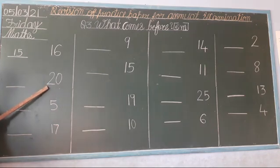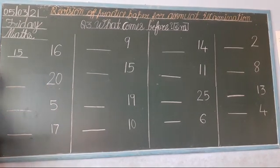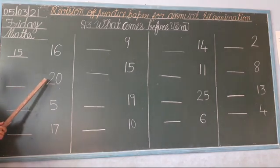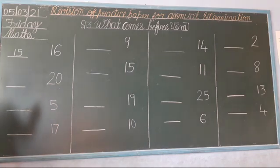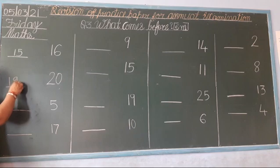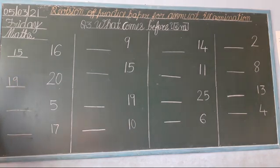Next, which number is this? 2, 0 — 20. So you speak: 11, 12, 13, 14, 15, 16, 17, 18, 19, 20. Which number comes before? 1, 9 — 19. Next which number? 19, 20. Okay.